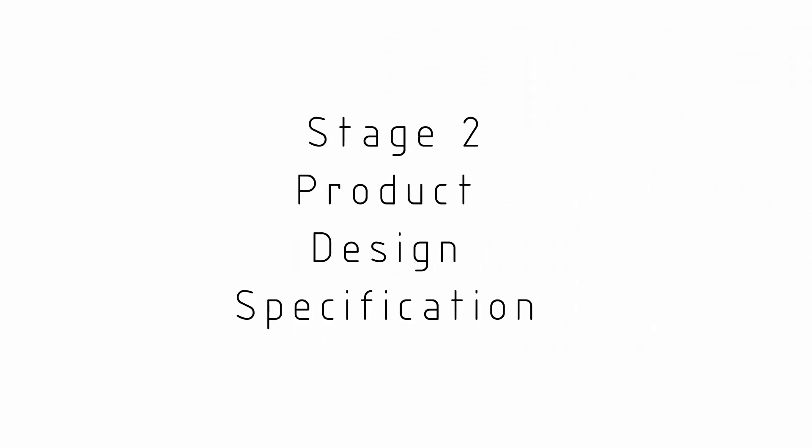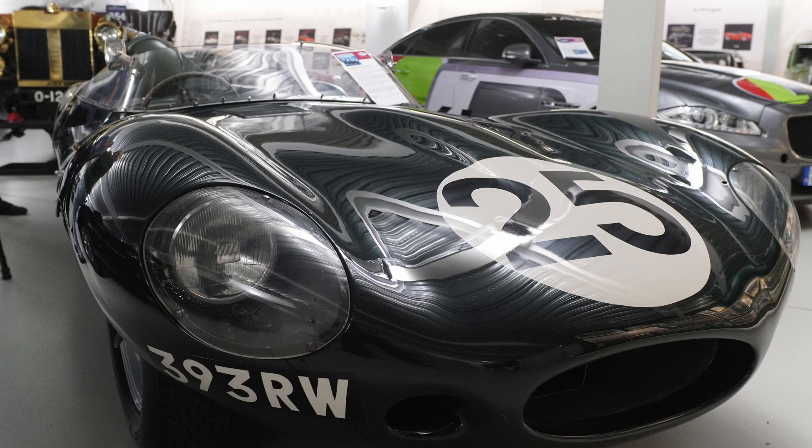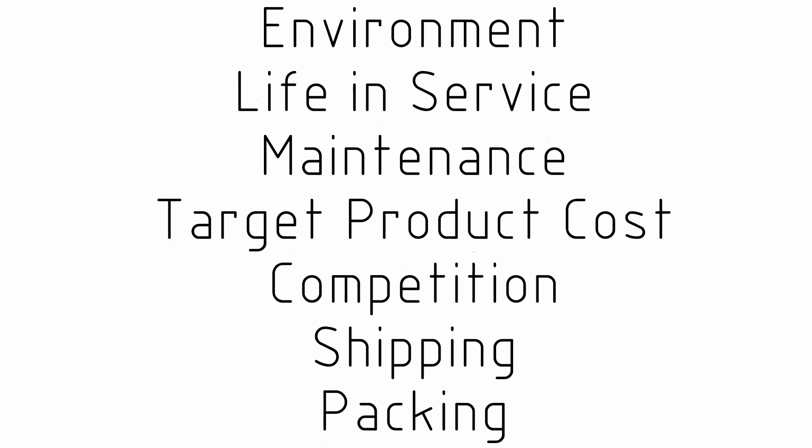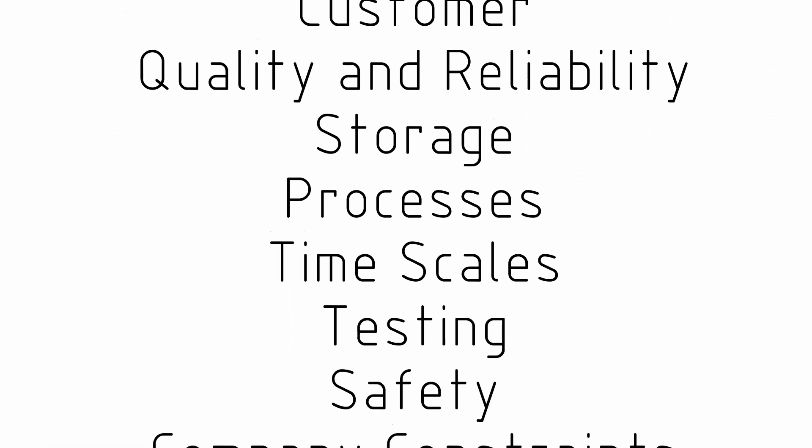The second stage is the product design specification. This is where we start to put numbers and requirements on our user or market needs, completely specifying the product. It becomes a document and guide for all future decisions — we check them against the product specification. To start with we might have a short list: fast, good looking, lots of carbon fiber. But there's much more to think about — maintenance requirements, manufacturing facilities, ergonomics, safety. It's good to start this early, even while conducting market research, as it helps determine benchmarks when comparing with other products.